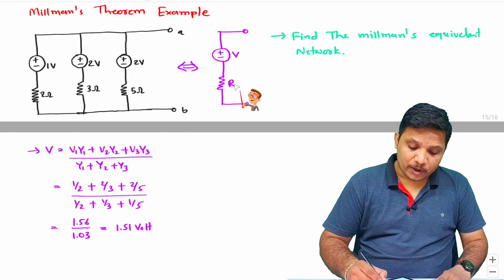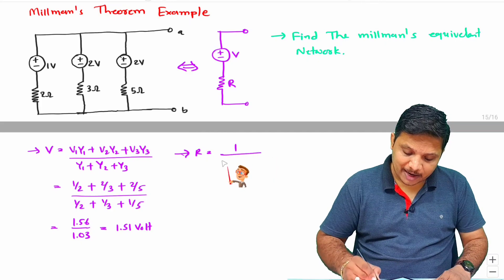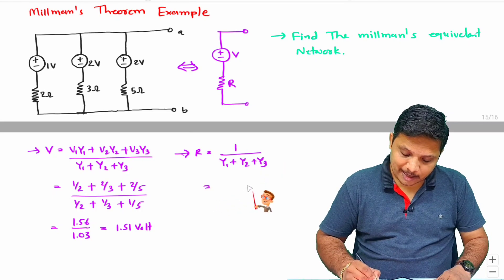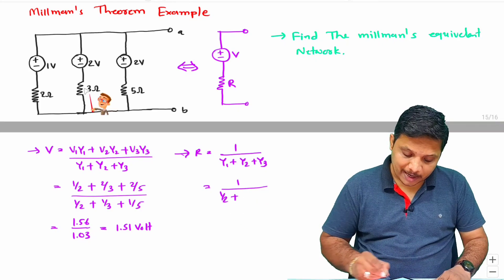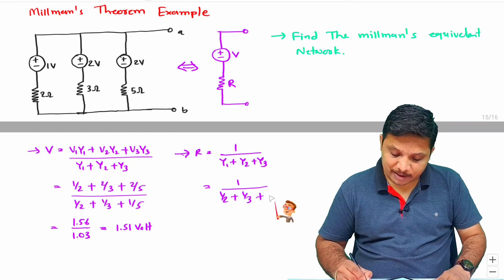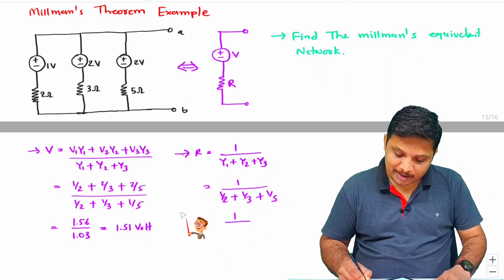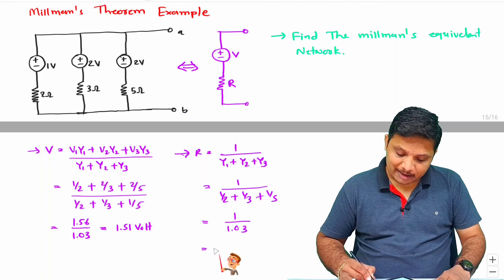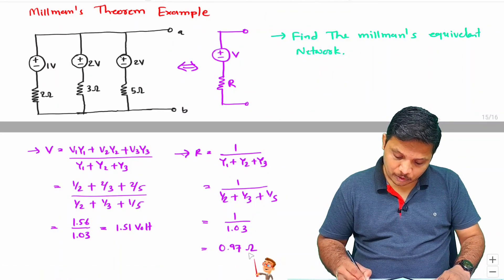If you wanted to have this R, then as per Millman's theorem this R will be 1 divided by Y1 plus Y2 plus Y3. Here Y1 is 1 by 2, Y2 is 1 by 3 and Y3 is 1 by 5 as per resistance given to us. This resistance will be 1 divided by 1.03 and that equals 0.97 ohm.